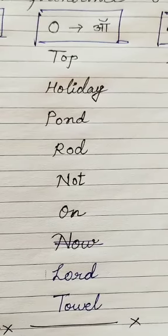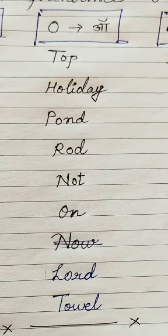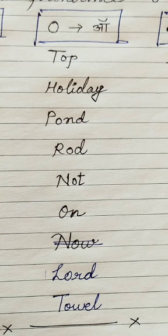वही हमारे पास long vowel sound में हैं O, जैसे टॉप, हॉलिडे, पॉण्ड, रॉड. यहां पर हम O को ज़्यादा लंबा प्रनाउंस करेंगे.